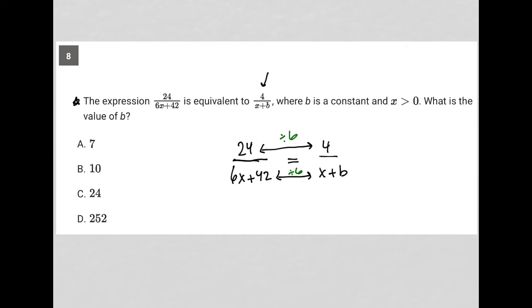Well, why do I say that? Well, because if I divide by 6, that's the only way for me to get from 6x to just an x, right? So let's just do that.